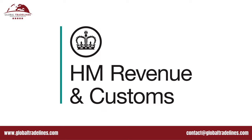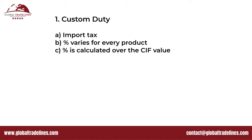Now you have successfully calculated the CIF value. Let's look into the two types of taxes that need to be paid to the HMRC before you can take the products out of UK customs. First, the custom duty. Customs duty is an import tax charged on all products originating outside the European Union. The percentage of custom duty varies from product to product and is charged on the CIF value of the product.